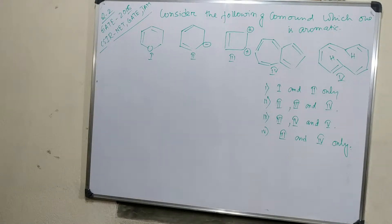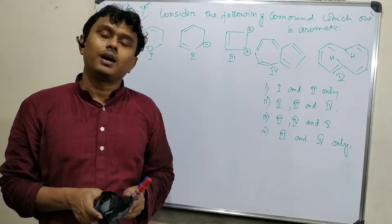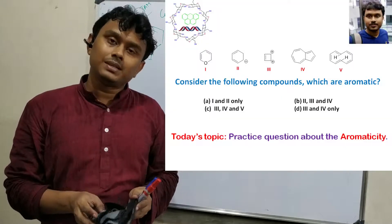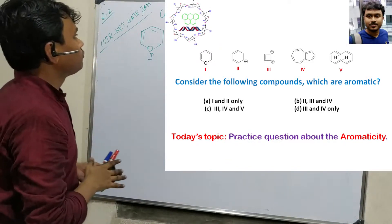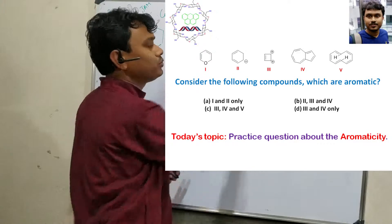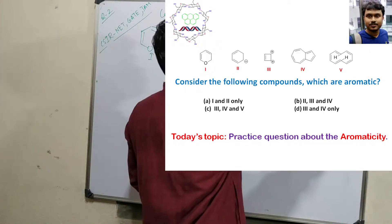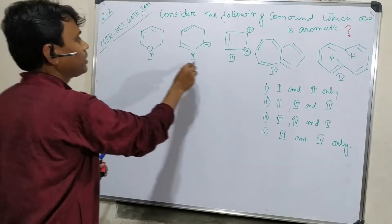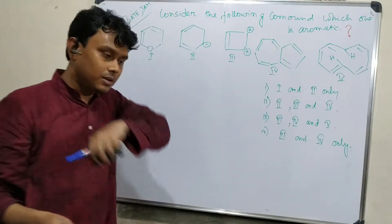Welcome friends, welcome you all to my channel Chemistry: The Mystery of Molecules. I am Tanuma. Today we will discuss a practice question. Consider the following compound: which one is aromatic? We have to find out which one is aromatic. These five structures are given and four options.